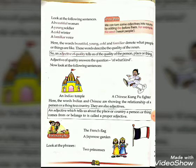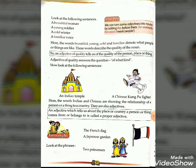Adjective of quality answers the question: 'Of what kind is the person, place or thing?' For example, look at the following sentences: 'an Indian temple' and 'a Chinese Kung Fu fighter.' Here the words Indian and Chinese are showing the relationship of a person or thing to a country.